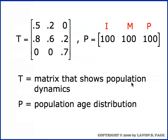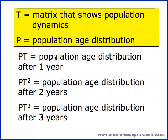To summarize what we have demonstrated: if T is our population dynamics matrix and P is our initial population distribution, then by simple matrix multiplication P times T gives the population distribution after one year. P times T squared gives the distribution after two years, P times T cubed after three years. You can use this procedure to track the population as far as you want — to find the distribution after twenty years, just multiply the initial distribution times the population dynamics matrix raised to the twentieth power.